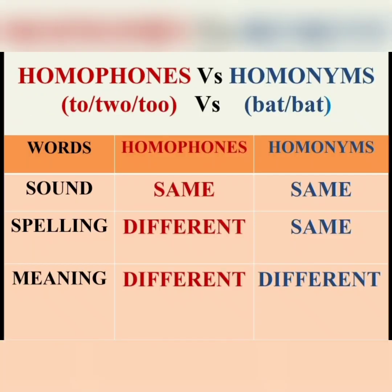Before we move on to the topic in detail, let us understand the difference between homophones and homonyms. Homophones will sound the same but differ in spelling and meaning — for example, 2, to, too. All three words are similar in sound but spelling and meanings differ. On the other hand, homonyms are words with similar sound and spelling but different meaning.